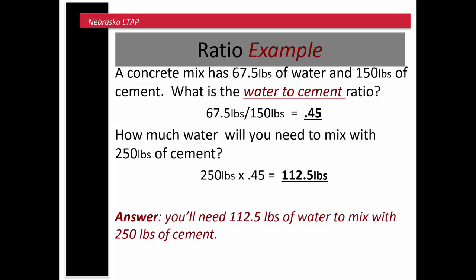The next question asks: how much water do we need to mix with 250 pounds of cement? We had 150 pounds of cement before, and someone now says we have 250 pounds. To maintain a water-to-cement ratio of 0.45, we multiply 250 pounds of cement times 0.45, which equals 112.5 pounds of water. So 250 pounds of cement needs 112.5 pounds of water to achieve the correct mixture ratio for this job.